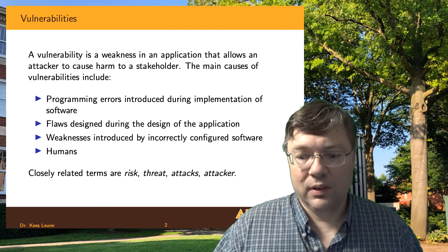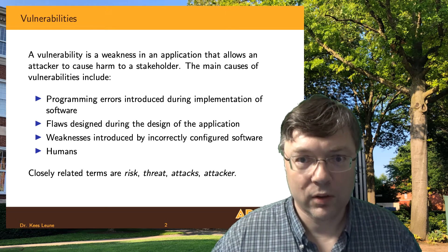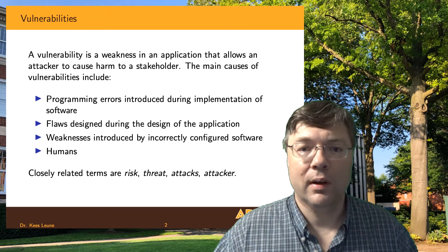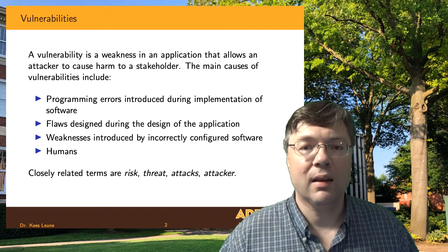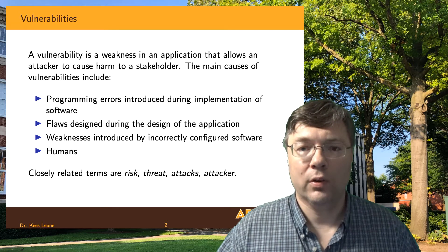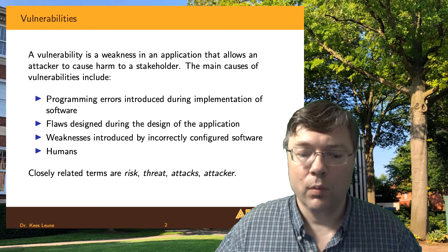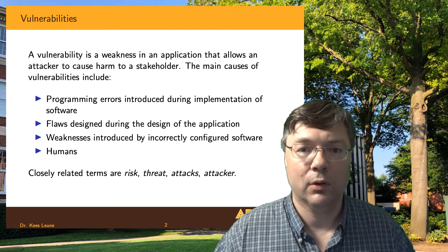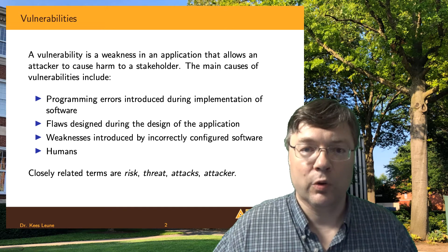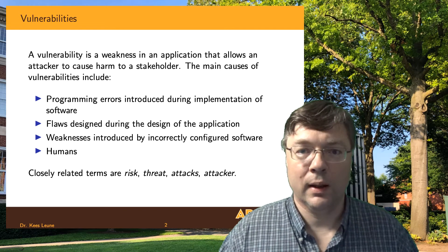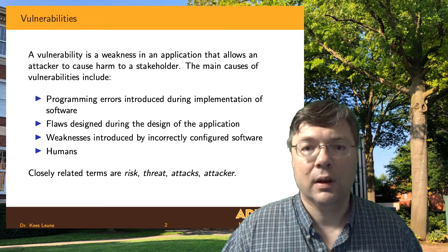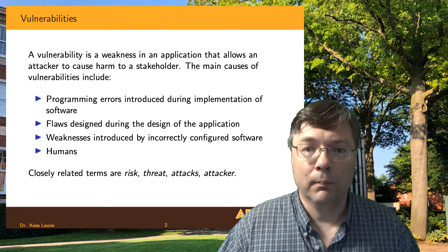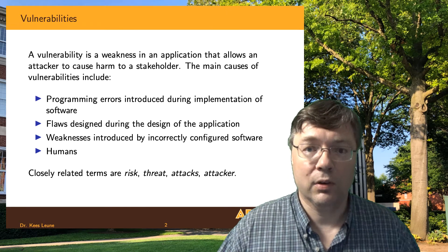We want to have a system designed in such a way that we assume there are vulnerabilities. That means we have to design it so we can deal with failure — we know what's going to happen. For example, when we build levees and dams, we purposefully build weak spots so that when they break, we can predict where they're going to break, and we pick that location so that damage is minimized. It's designing for failure, and to the extent possible, we'd like to do the same thing in software.